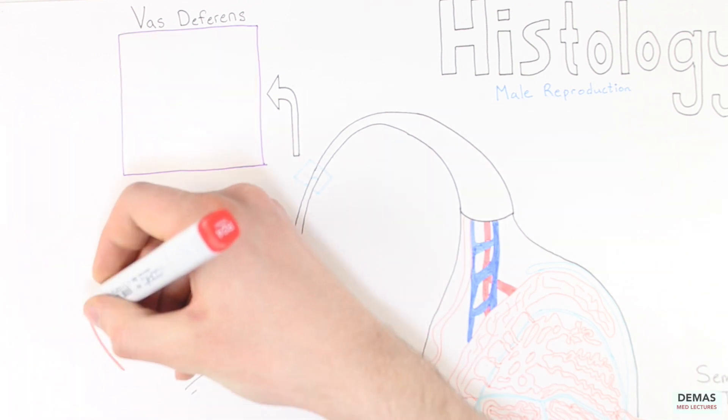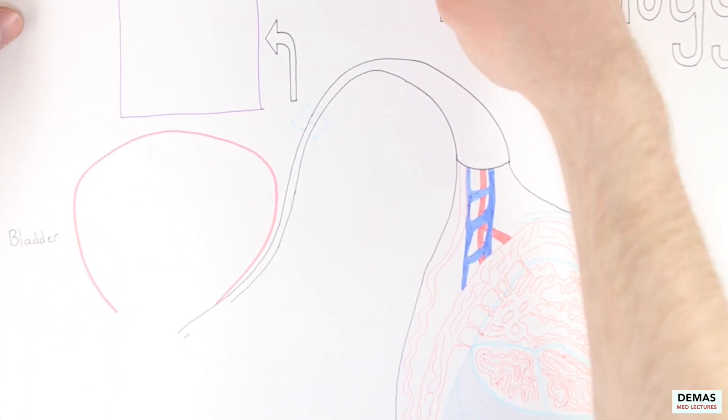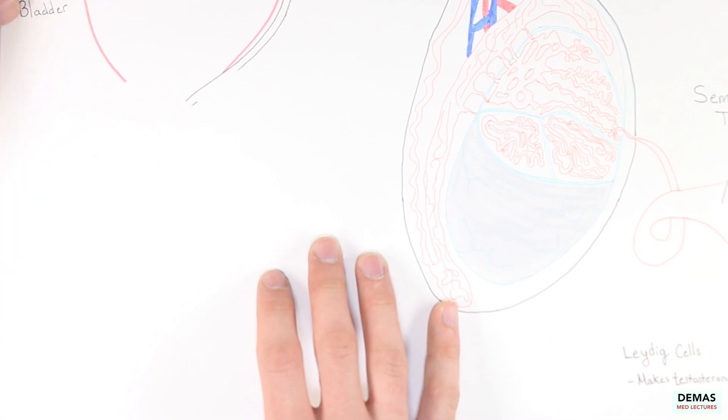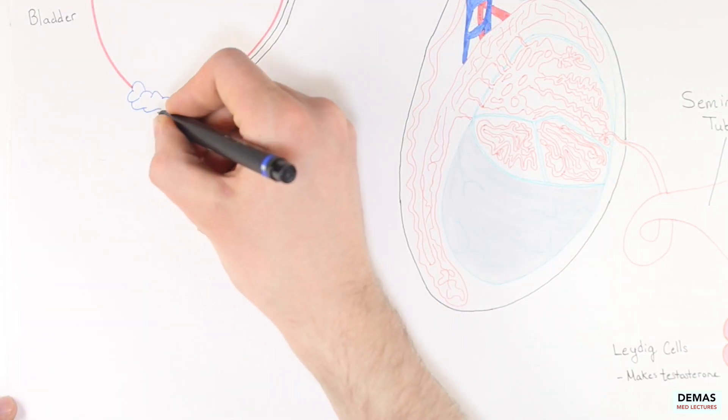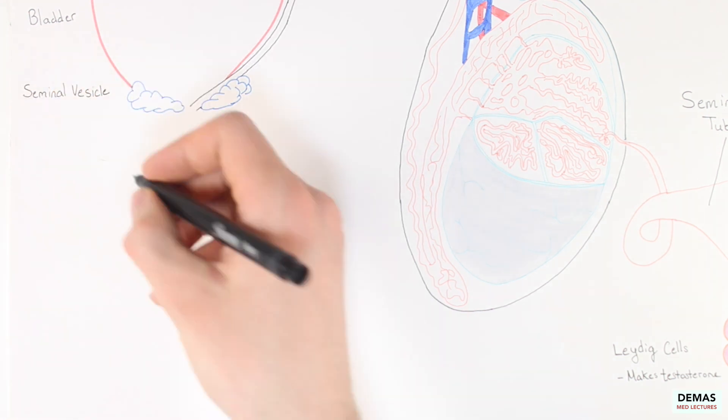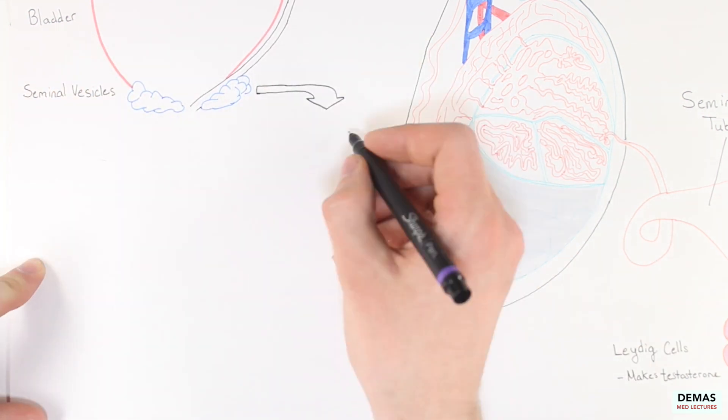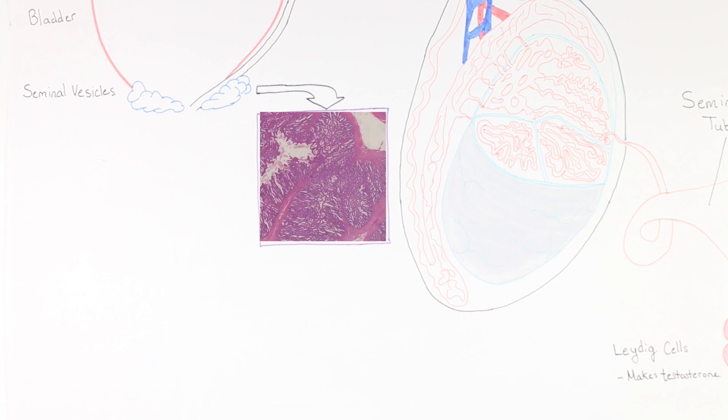Next, the vas deferens runs just adjacent to the bladder as shown here. At the distal end of the vas deferens are two paired glands adjacent to the prostate, which I will draw on in a moment, known as seminal vesicles. The seminal vesicles are coiled tubes lined with columnar cells that manufacture and secrete seminal fluid, which is a major component of semen.